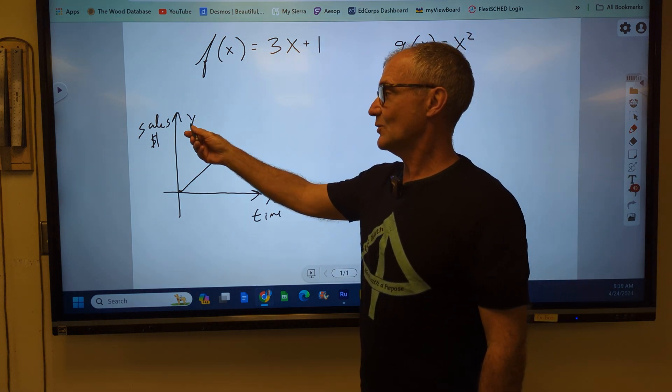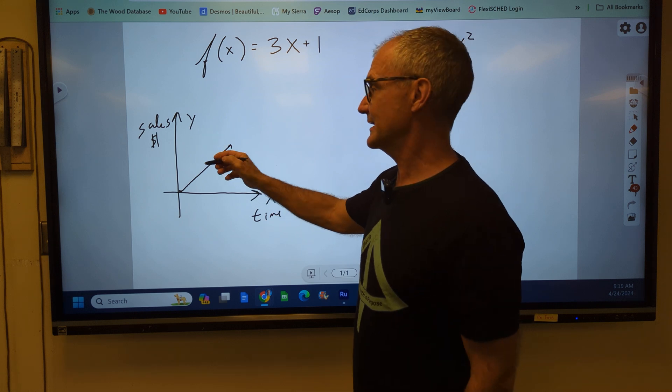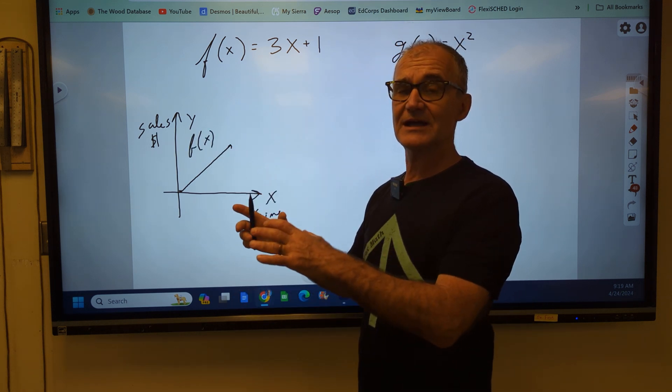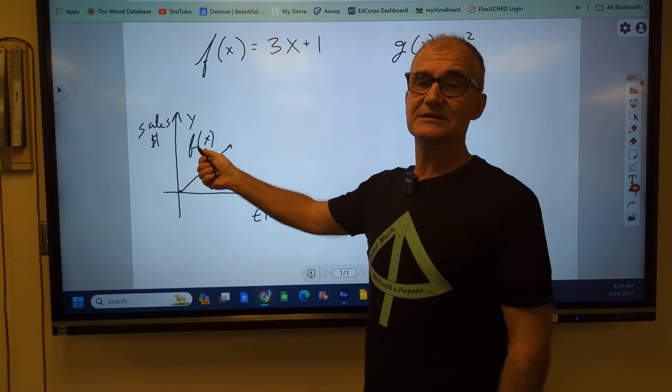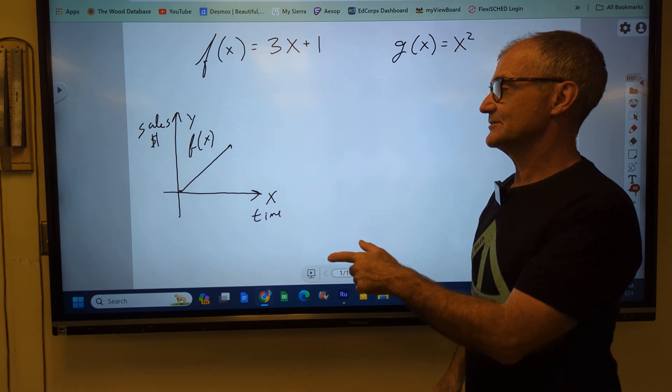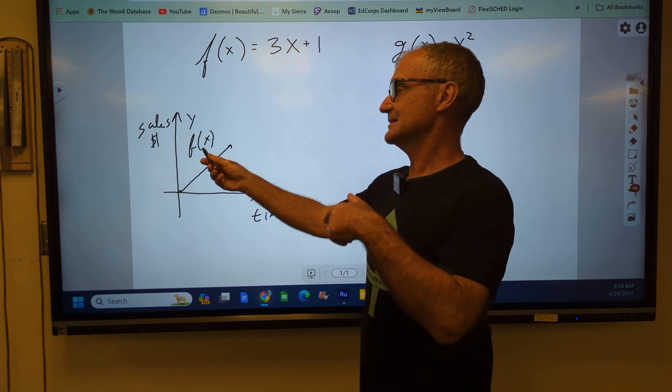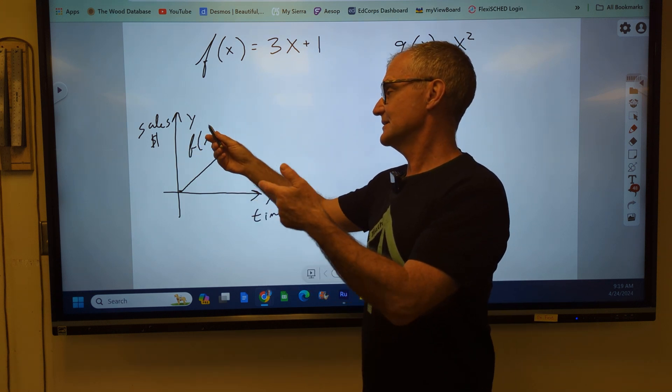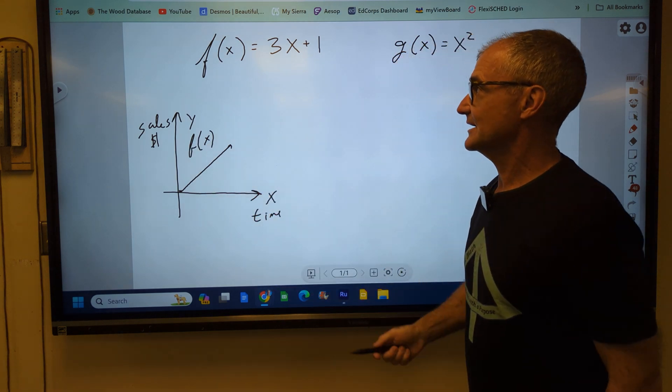If you're talking about y depending on x, it is common to replace y with f of x to say that it is a function. So f of x and y are interchangeable when you start talking about dependent, independent variables, and they follow the definition of what a function is. So f of x is saying that it does follow the definition of a function. It is going to have a dependent variable depending on an independent variable.